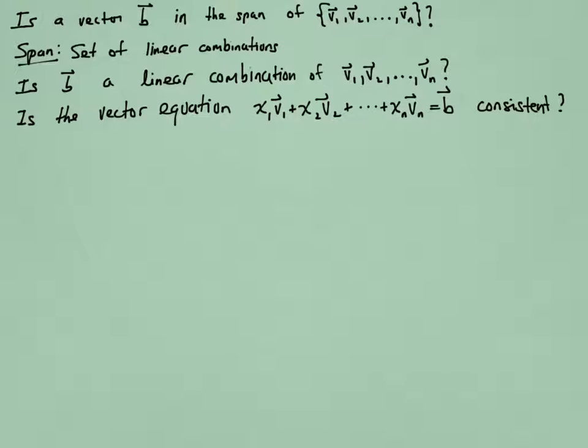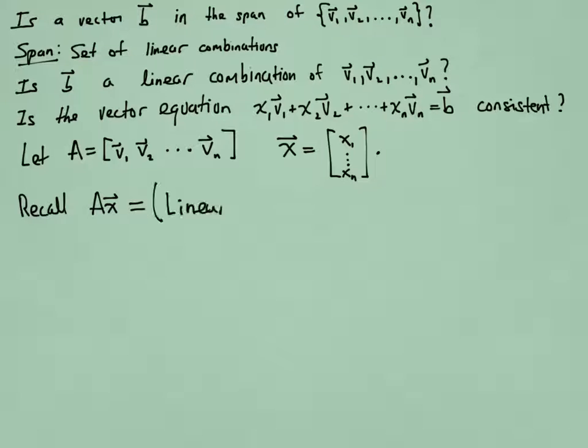It's more convenient to look at this in matrix form. So we'll let A be the matrix whose columns are the vectors V. And we'll let x be the matrix representing the weights in our equation, x1 through xn. So it's a column vector with n entries.